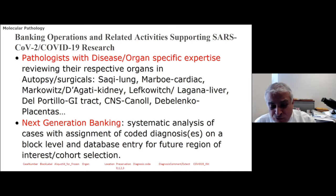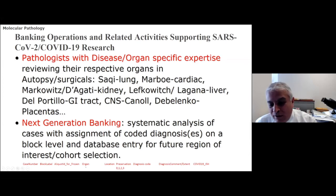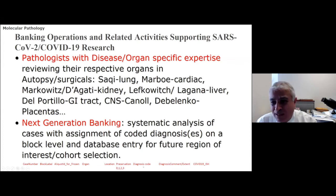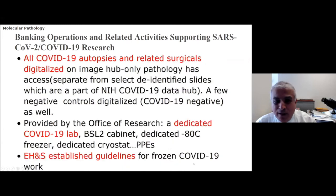The identification of region of interest is quite important. At the block and case level, we are collecting characteristics such as: what is the case, what is the block, is it frozen or paraffin, what is the organ and its location — for example, lung upper lobe — what is the coded diagnosis (a particular block may have multiple coded diagnoses such as DAD, microthrombi, congestion), any diagnosis comment regarding extent, and whether COVID ISH or IHC is positive.